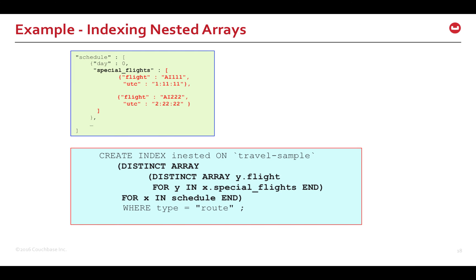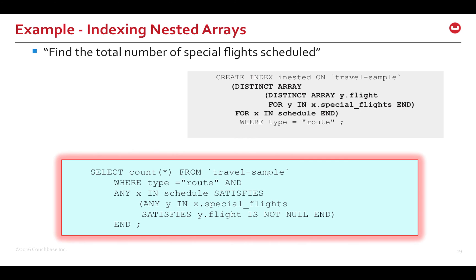Finally, let's look at an example with nested arrays. Consider the schedule array in the travel sample with the nested array special flights. Note that the CREATE INDEX statement also uses the nested form of the DISTINCT ARRAY construct to create the index on each distinct special flight in schedule. Here is a SELECT statement to find the total number of scheduled special flights, which uses the nested array index we created in the previous slide. Again, note the nested form of the ANY construct and the use of matching variable names and index keys of the corresponding CREATE INDEX statement.